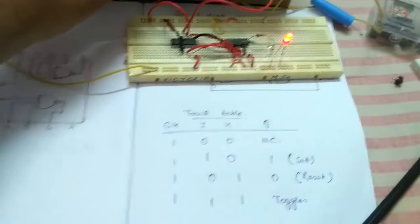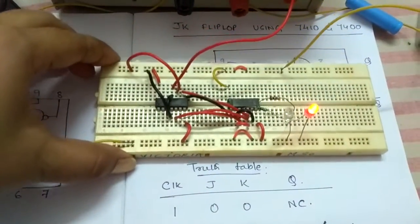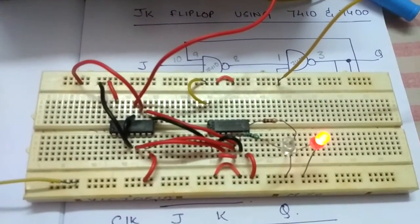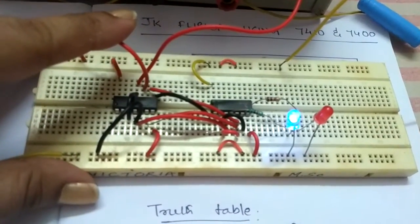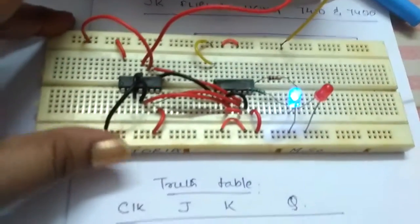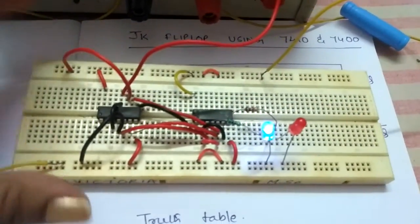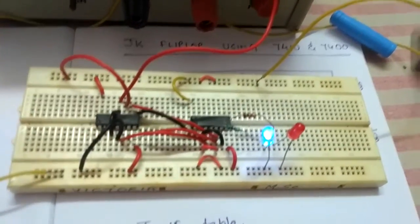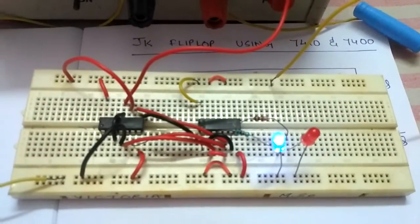The JK flip-flop satisfies the truth table and here is the circuit once again with a closer view. This is the condition of J is 1, K is 0 with set condition. I hope it's quite clear to you all. If you have any kind of queries, please drop your questions in the chat box. Thank you all.